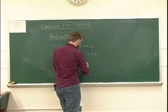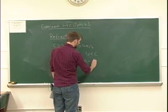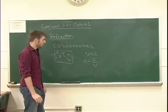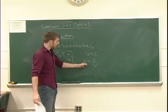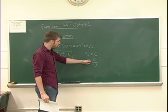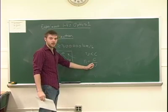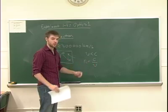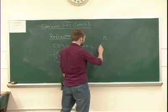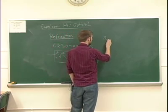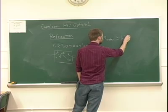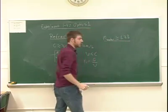You can define the index of refraction N to be the original speed of light C divided by the effective speed V. For vacuum, N is just 1 — C divided by C. For air, N is almost 1, slightly larger than 1. However, for materials like water or glass, N can be significantly larger than 1. For example, the index of refraction of water is about 1.33. This is another thing you're going to be measuring today.